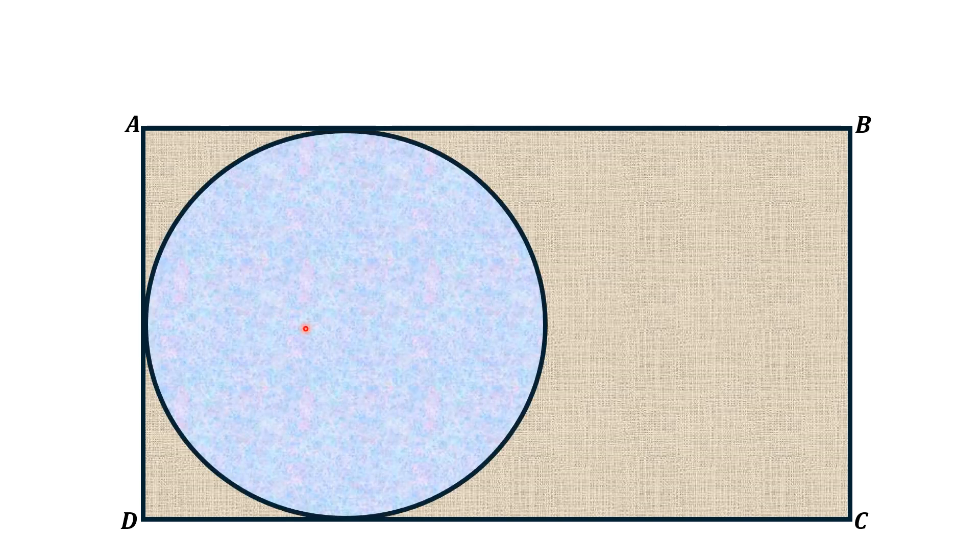Hello everyone, in this video we are given a rectangle ABCD and a circle is inscribed in this rectangle in such a way that three of its sides of the rectangle are tangent to the circle.